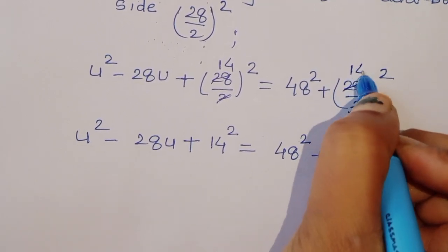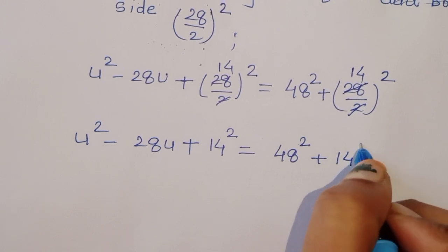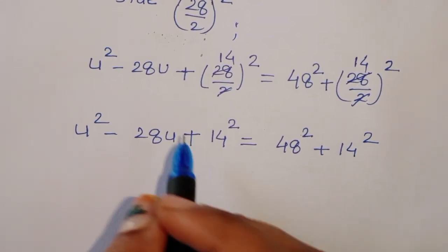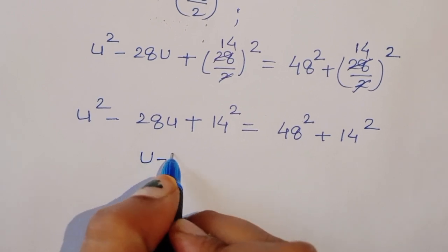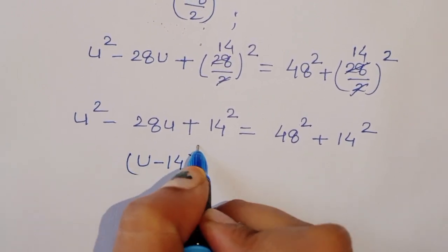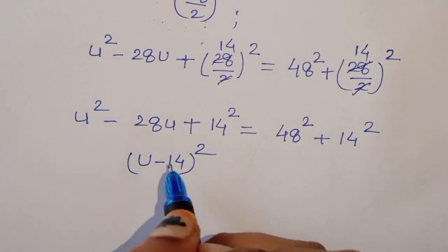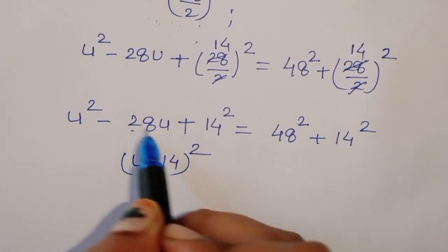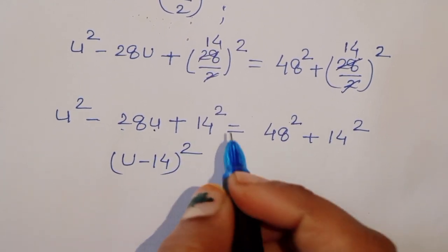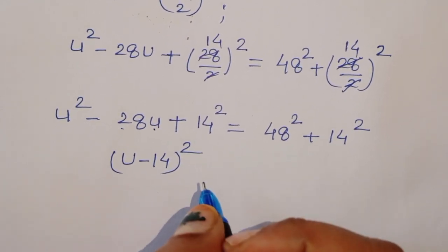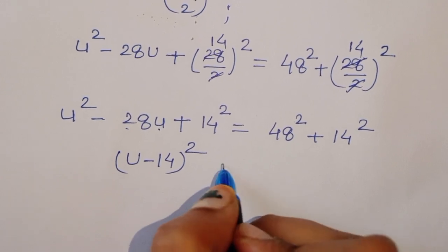So 28/2 = 14, giving us 14². The left side factors as (u - 14)², using the identity a² - 2ab + b² = (a - b)². So (u - 14)² = 48² + 14².